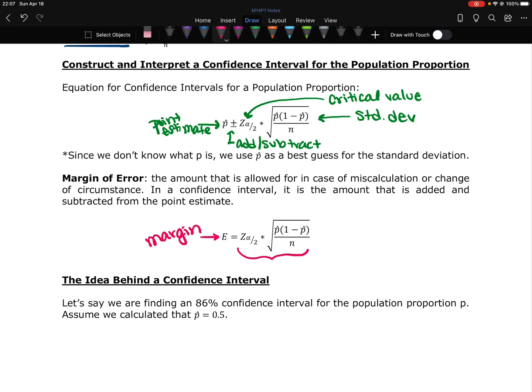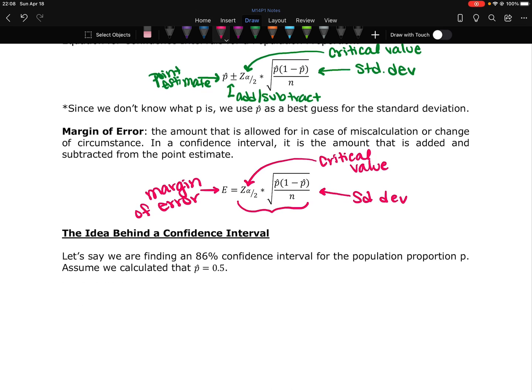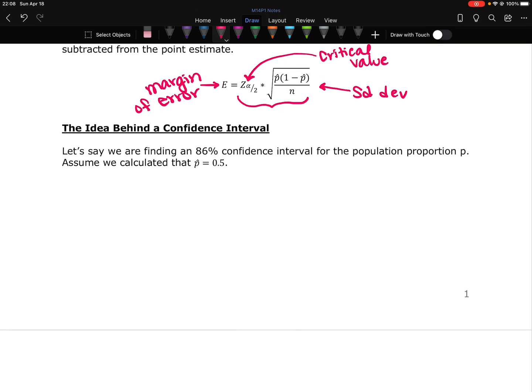So the margin of error. And again, it's found by a z score, also known as our critical value, and then our p times 1 minus p divided by n in the square root. And those p's are p hats. That's our standard deviation formula. So let's look at what we are actually doing here. What's happening?